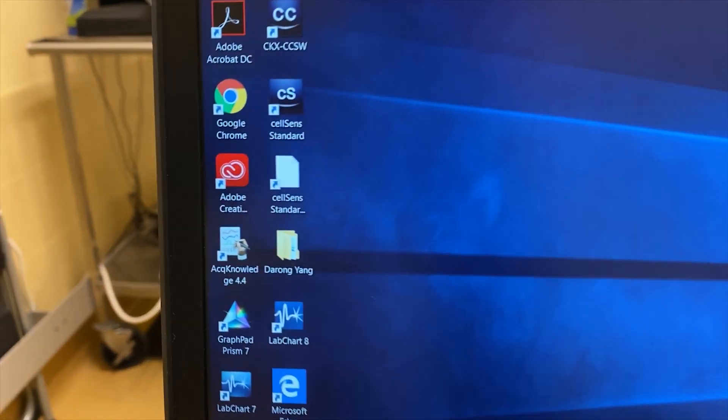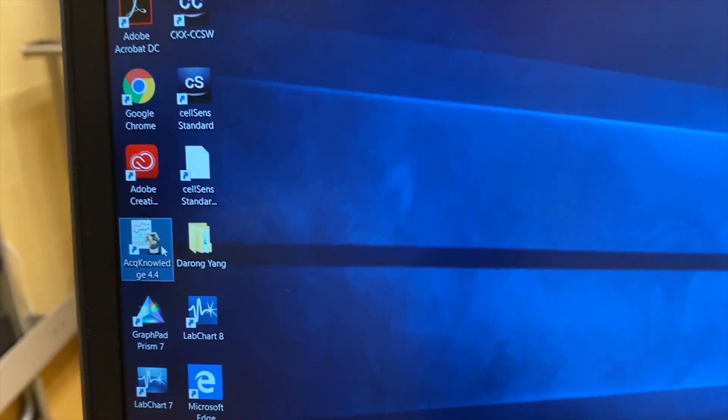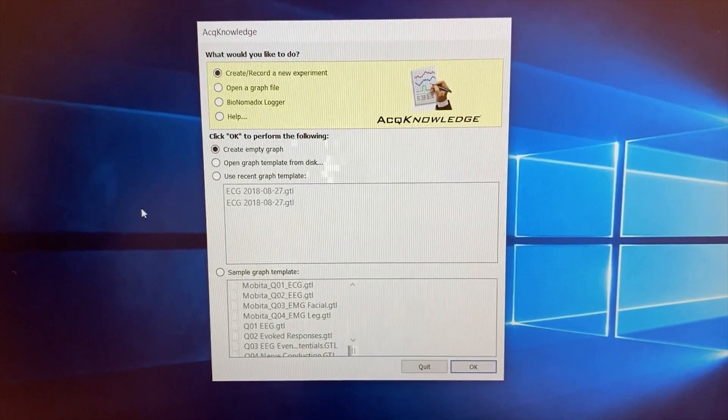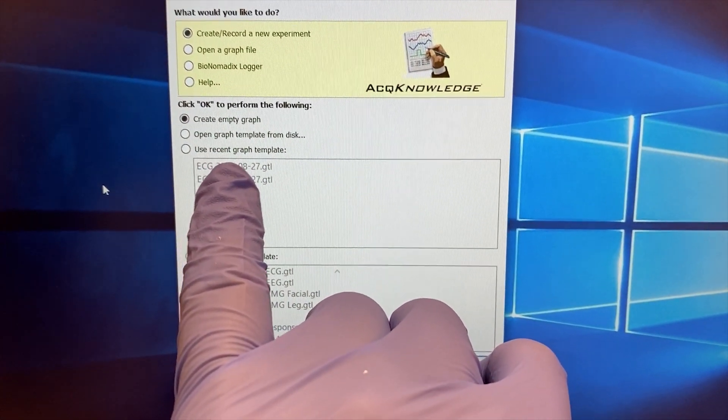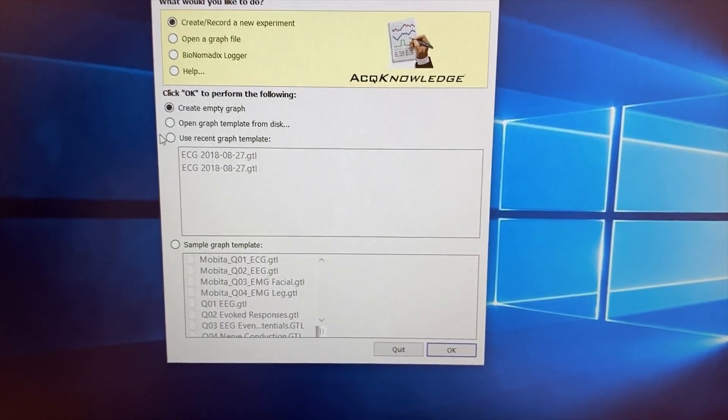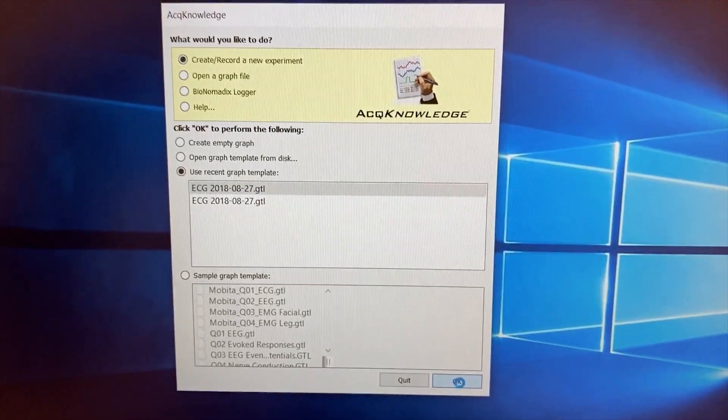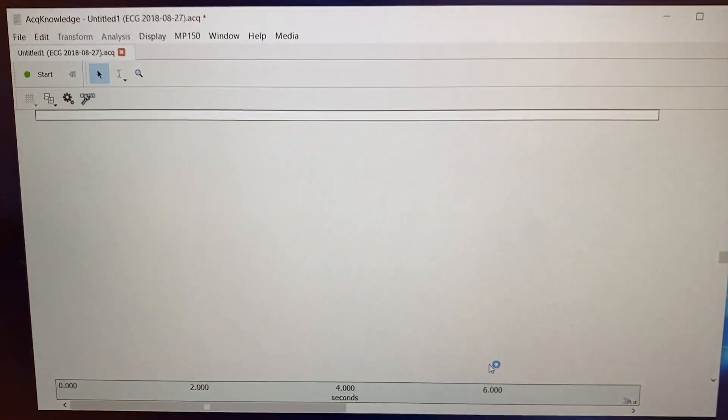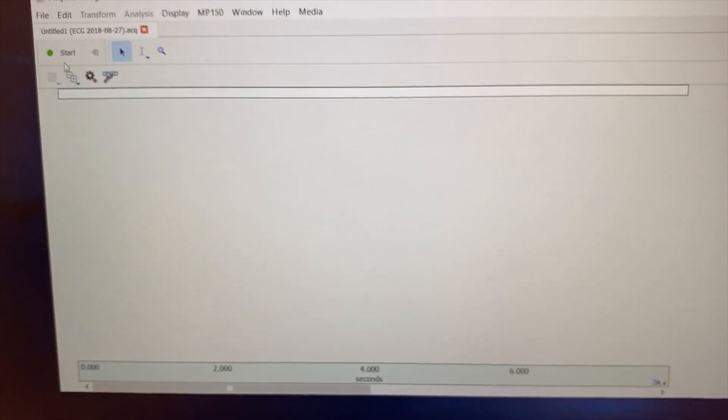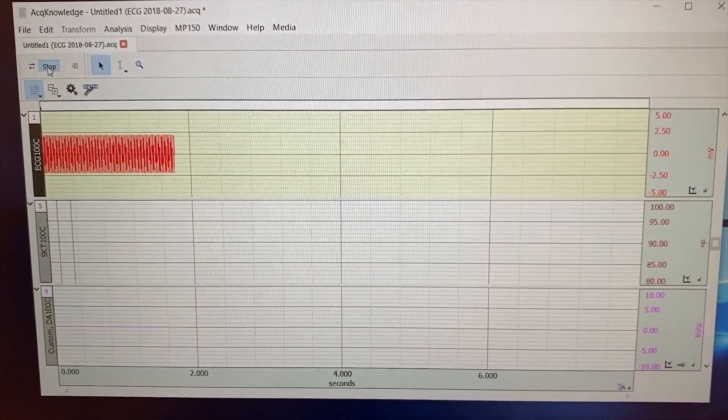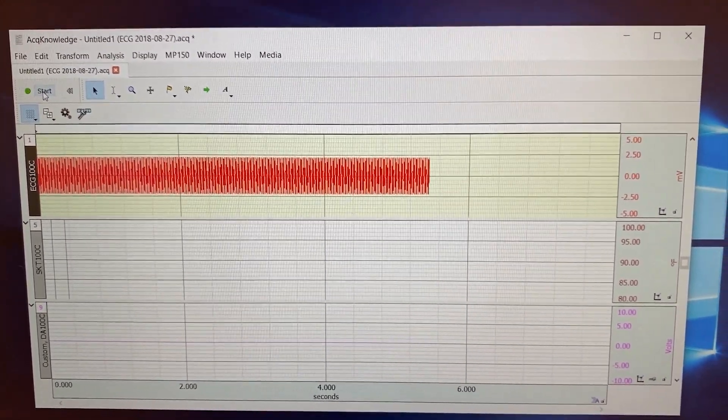In the computer, we will use this software to record the ECG. And most time I will use this template. Select it here. And OK, you will get all the parameters in this software. And you can just use the star to start recording the mouse ECG. And the second click stop.